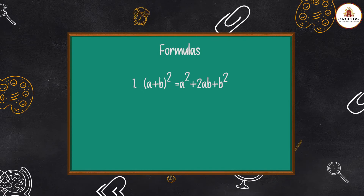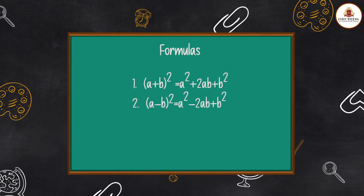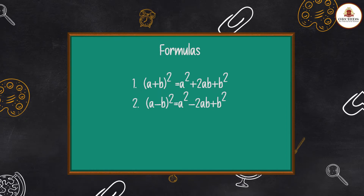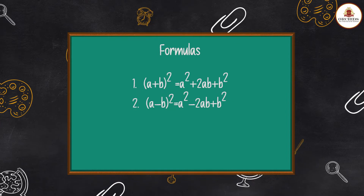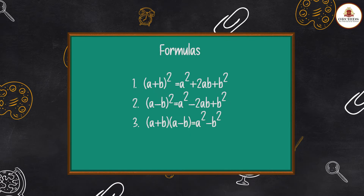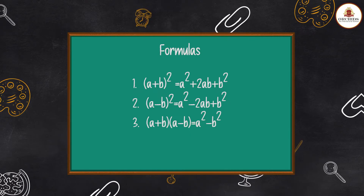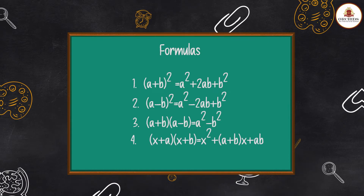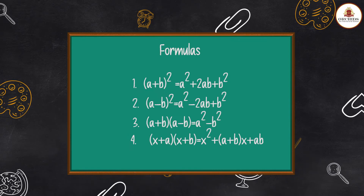1. (a + b)² = a² + 2ab + b²  2. (a − b)² = a² − 2ab + b²  3. (a + b)(a − b) = a² − b²